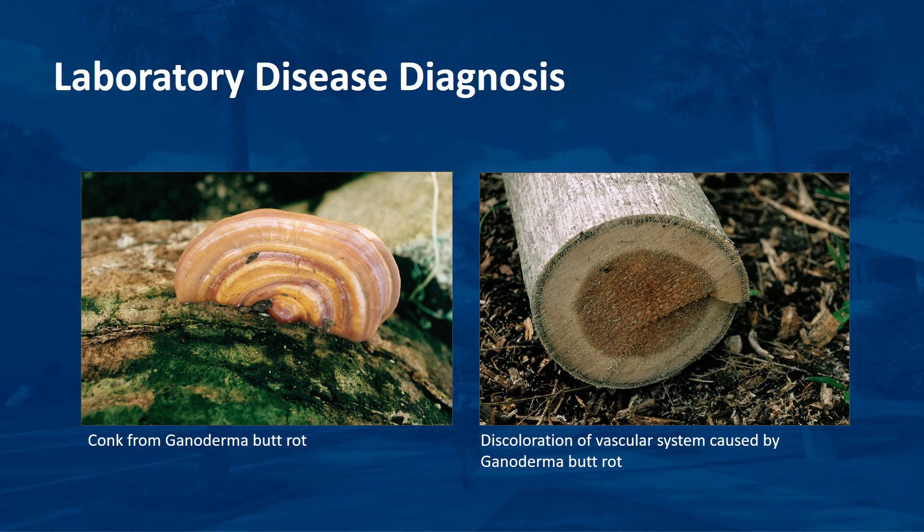Sometimes it is not possible to make a confirmation of a field diagnosis until a dead or dying palm is cut down. For example, palms affected by ganoderma butt rot may die without producing conks from the lower trunk area. However, when the palm is cut down and multiple cross-sections are made at the trunk, the disease will be easily confirmed based on the pattern of discoloration within the trunk and without the necessity of a laboratory diagnosis.